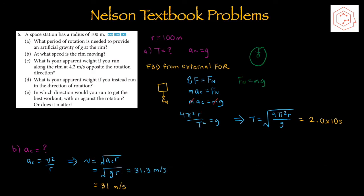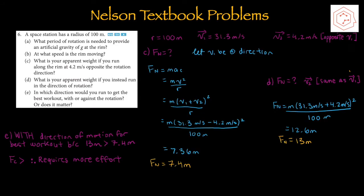Part B: at what speed is the rim moving? Using ac = v²/r, isolating for speed and plugging in the known values gives speed equal to 31 m/s.